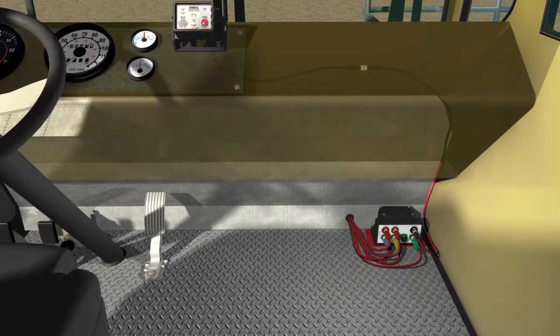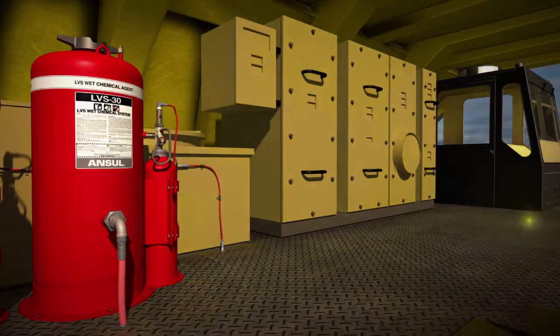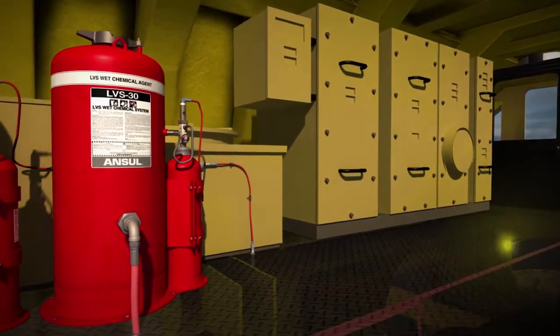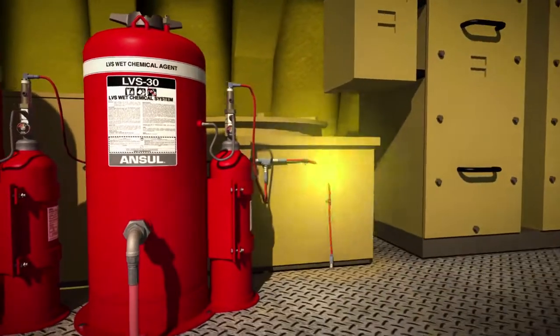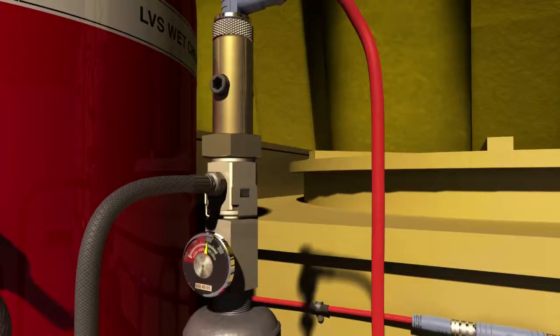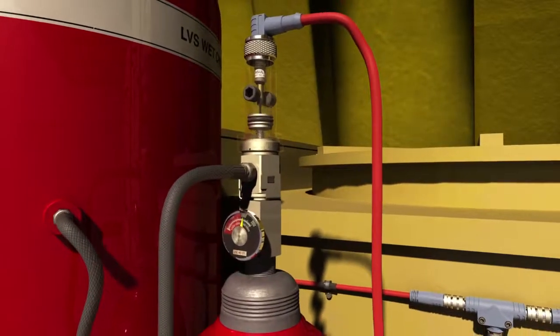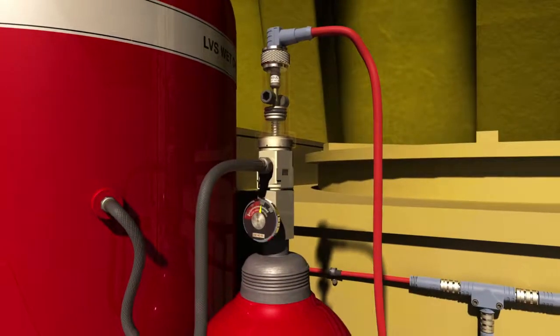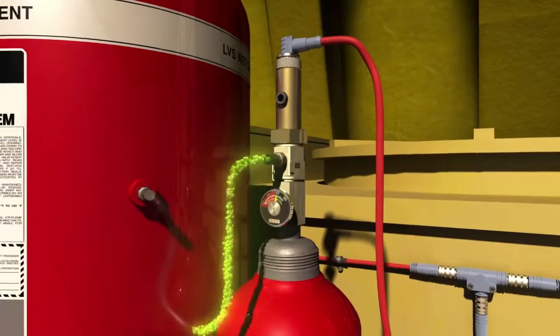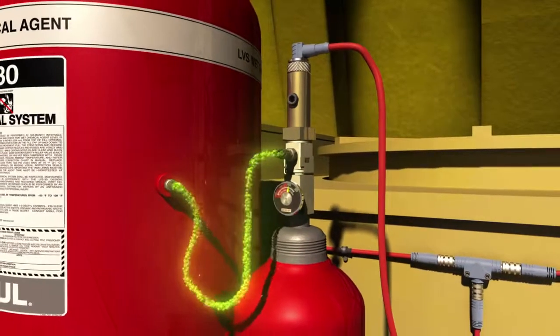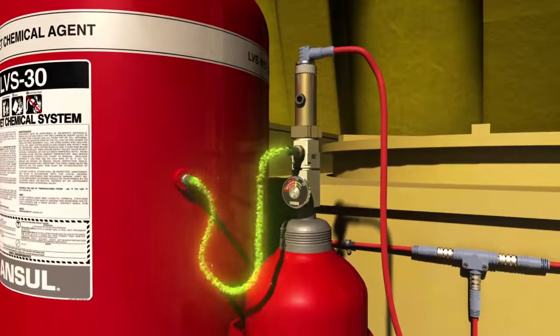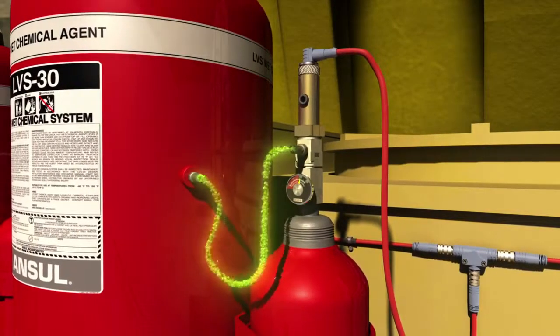After the predetermined time delay period, the CheckFire 210 interface control module sends a signal to the protracting actuation device. The protracting actuation device generates force to drive the electric pneumatic actuator puncture pin through a seal in the expellent gas cartridge, allowing the nitrogen expellent gas to flow into the agent tank.